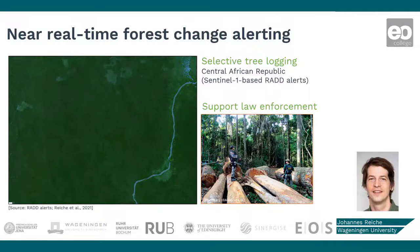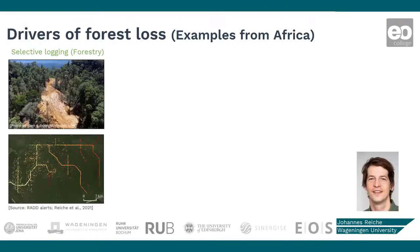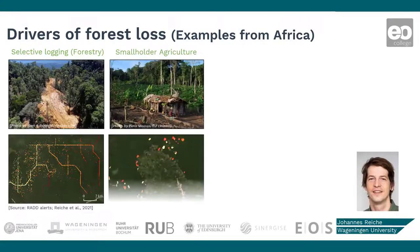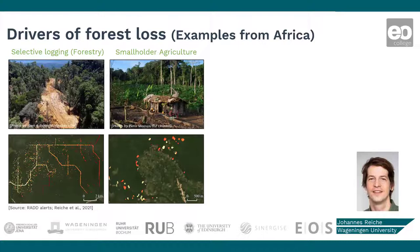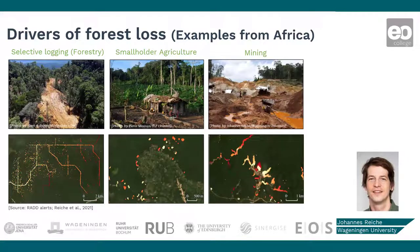Analyzing patterns of change and underlying information can help us to identify and study different drivers of forest loss. Here are three prime examples from Africa. The first shows selective logging, the second shows smallholder agriculture — which is actually the major driver of forest loss in Africa, associated with communities cutting small areas of forest for planting new crops — and the third driver is mining, in this case open-pit gold mining.